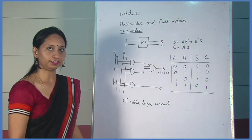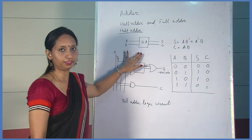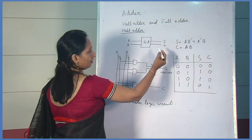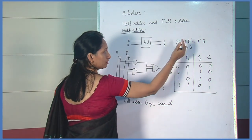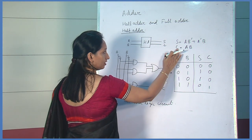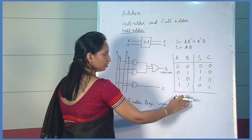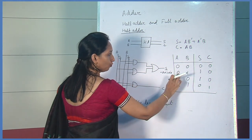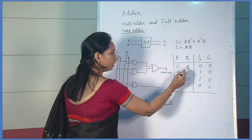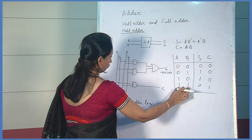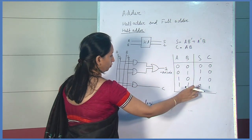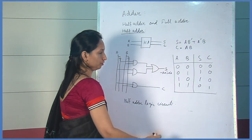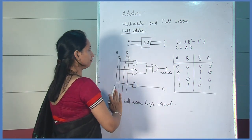The half adder logic circuit is a combinational logic circuit which adds 2 bits and gives 2 outputs. The 2 bits are A and B, and the outputs are sum S and carry C. The sum equation is A·B̄ plus Ā·B and carry output is A into B. In the truth table, for 2 bits there are 4 combinations. The sum output is high when any one of the inputs is high, and when both inputs are equal — either both 0 or both 1 — then the sum output is 0. For the carry output, when both inputs are 1, then the output is high.